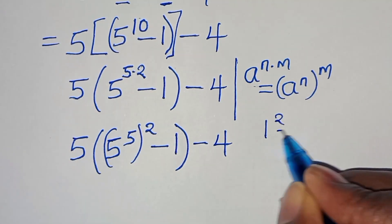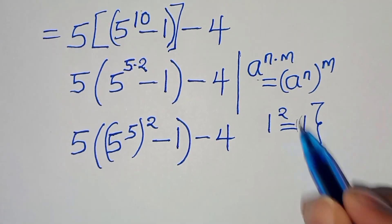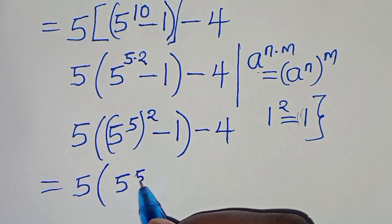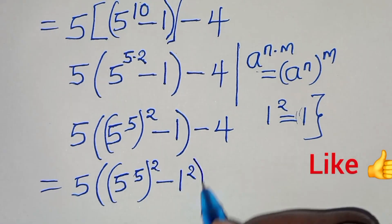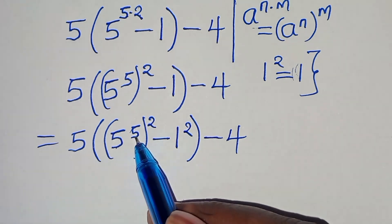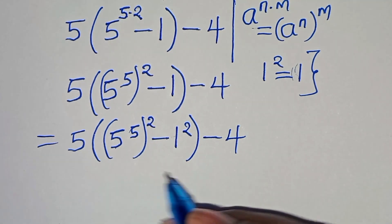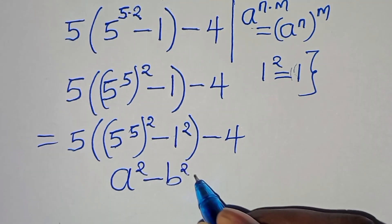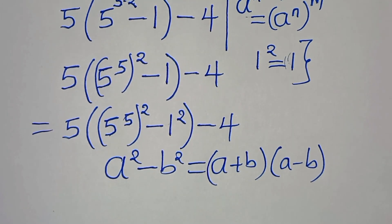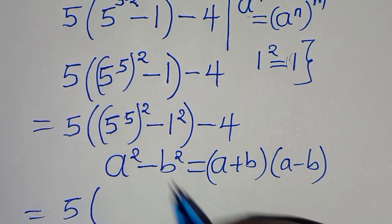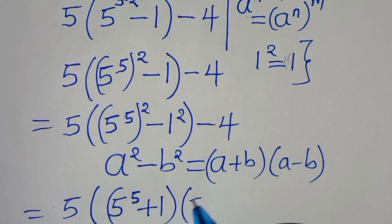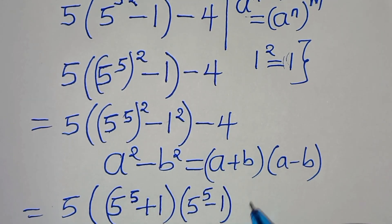Now, since 1 squared equals 1, we can express this as 5 times the quantity: (5 to the power of 5) squared minus 1 squared, then minus 4. This expression (5^5)² minus 1² is the difference of two perfect squares in the form a squared minus b squared, which factors as (a + b)(a − b). So we have 5 times (5^5 + 1)(5^5 − 1), then minus 4.